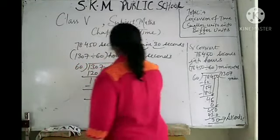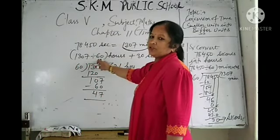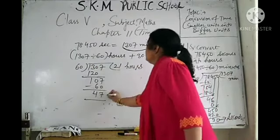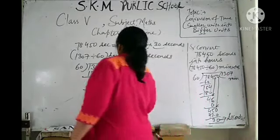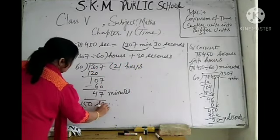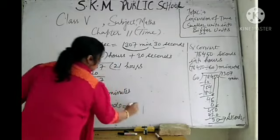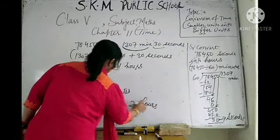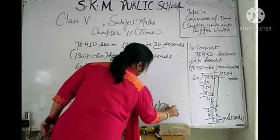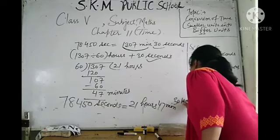You are left with 21 hours, because the minutes were divided by 60 to convert into hours. So now you have 21 hours and 47 minutes. In short, 78,450 seconds is equal to 21 hours, 47 minutes, and 30 seconds.